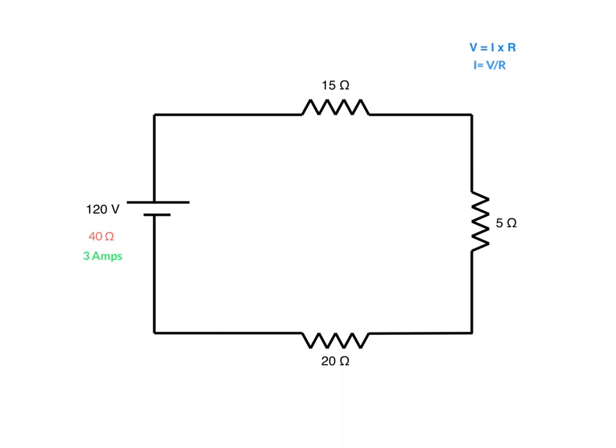To figure out what our voltage drops are going to be across the resistors, all we have to do is take this 3 amps and use the formula V equals I times R. We can go 3 times 20, 3 times 5, and 3 times 15, which will give us the voltage drops across each resistor.